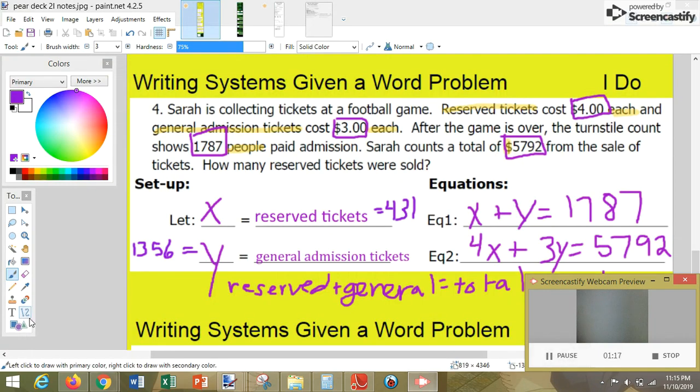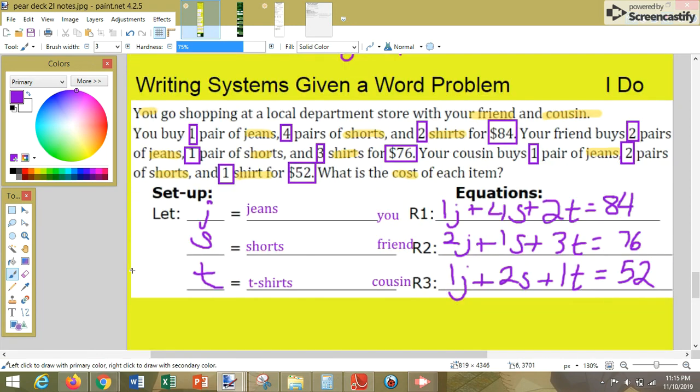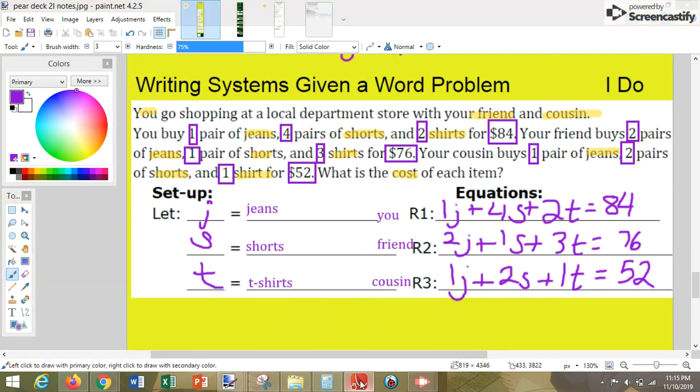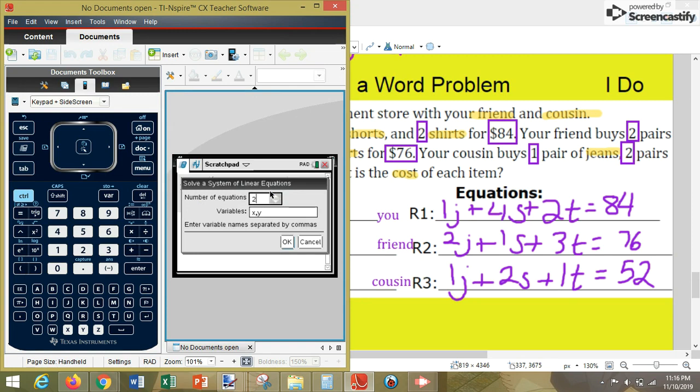That basically means that there's 431 reserve tickets sold and 1,356 general admission tickets sold. For the next one, we'll put this one in the calculator. You press menu, three algebra, two solve system of linear equations.